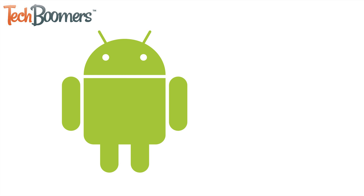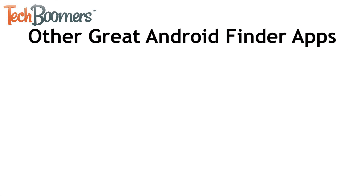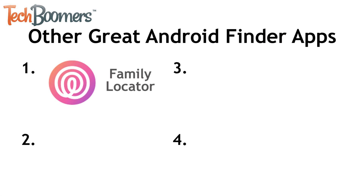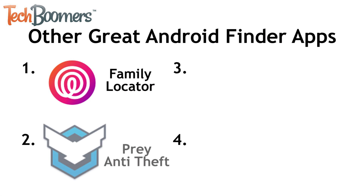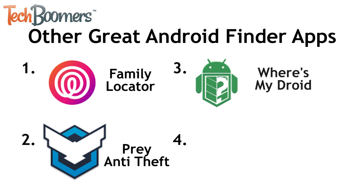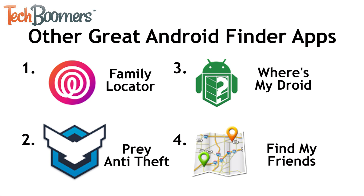Now that we've shown you how to locate your lost Android phone, there are a few other apps we'd recommend checking out and downloading in case you lose your device in the future. The four apps we'd recommend are Family Locator, Prey Anti-Theft, Where's My Droid, and Find My Friends. These four apps are all great options to help you locate a lost or stolen Android. Links to download them from the Google Play Store will be listed in the description box.